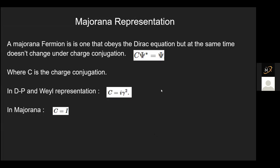The third one is the Majorana representation. A Majorana fermion is one that obeys the Dirac equation like the previous two, but at the same time doesn't change under charge conjugation.